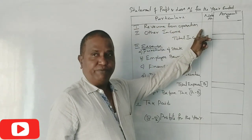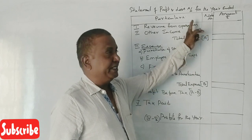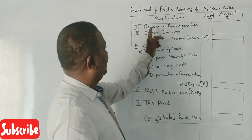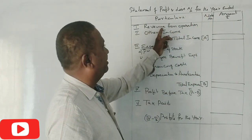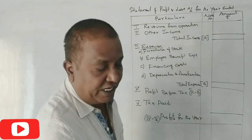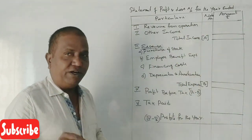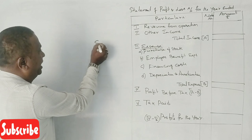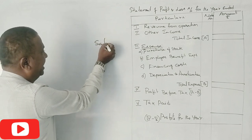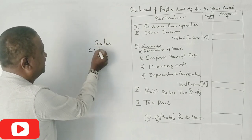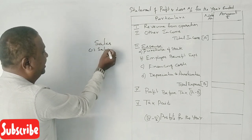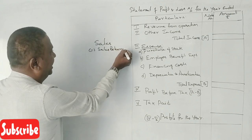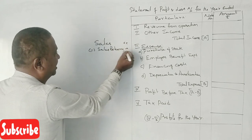The first heading in the Statement of Profit and Loss is Revenue from Operations. Particulars, Note Number, Amount. Revenue from Operations is Sales minus Sales Returns.